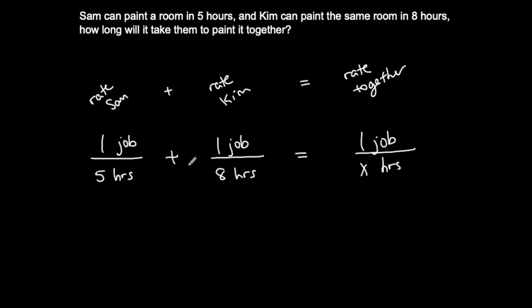So, I created, if I lose my words, one-fifth plus one-eighth is equal to one over x, I created a rational equation with this.